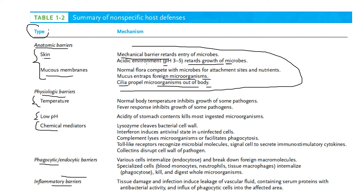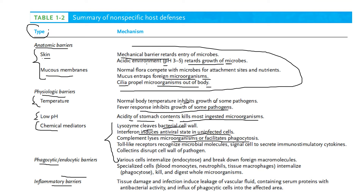Some physiological barriers include temperature: normal body temperature inhibits growth of some pathogens, and the fever response also inhibits pathogen growth. Low pH — the acidity of stomach contents — kills most ingested microorganisms. Chemical mediators include lysozyme, which cleaves bacterial cell walls; interferon, which induces an antiviral state in infected cells; and complement, which lyses microorganisms or facilitates phagocytosis.